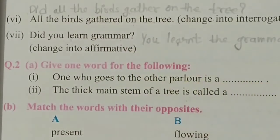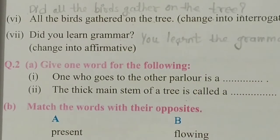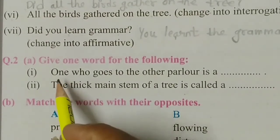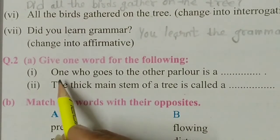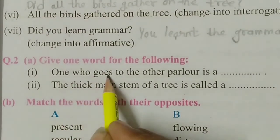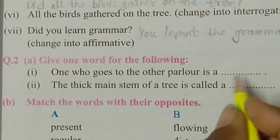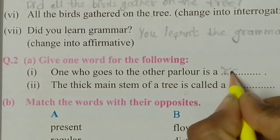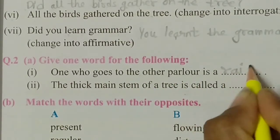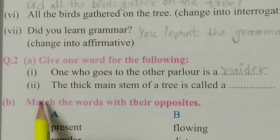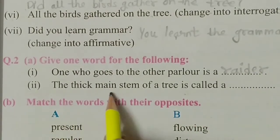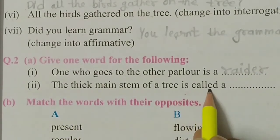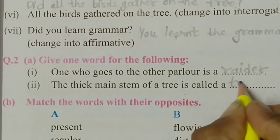Next: give one word for the following. One who goes to the other parlor is a rider. The thick main stem of a tree is called a trunk.